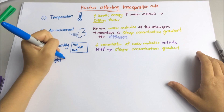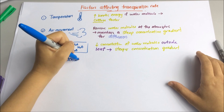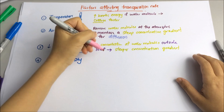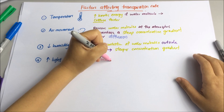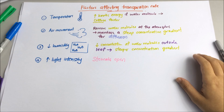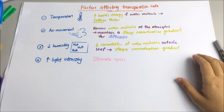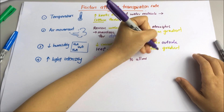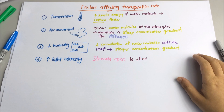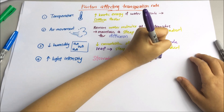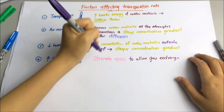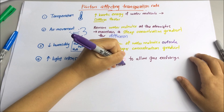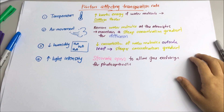Last but not least, light intensity is also another factor that can affect the transpiration rate. As the light intensity increases, the light will stimulate the opening of stomata. As a result, the stomata opens wider and hence more water vapour can evaporate through the stomata. Remember that light will stimulate the stomata to open to allow gas exchange for photosynthesis.